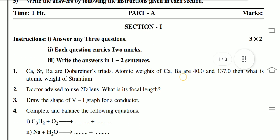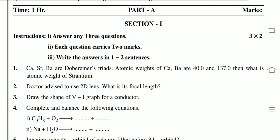Part A has 3 sections. Section 1: answer any 3 questions, each question carries 2 marks, 3 into 2 is 6 marks.